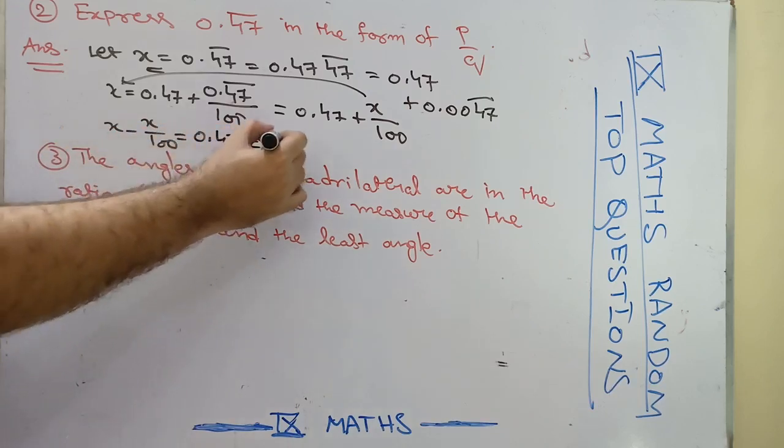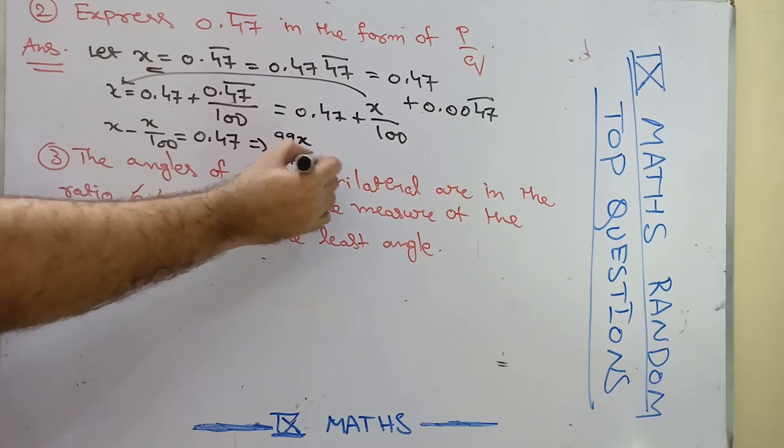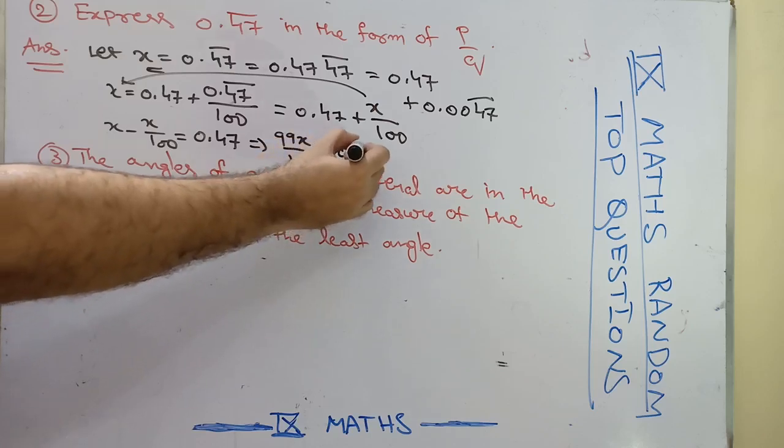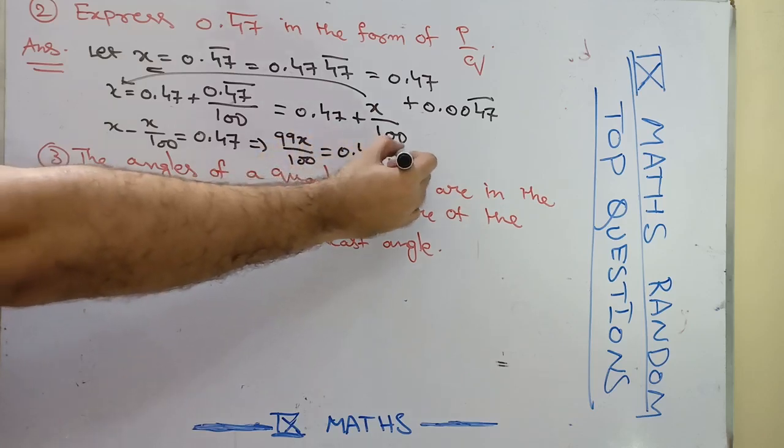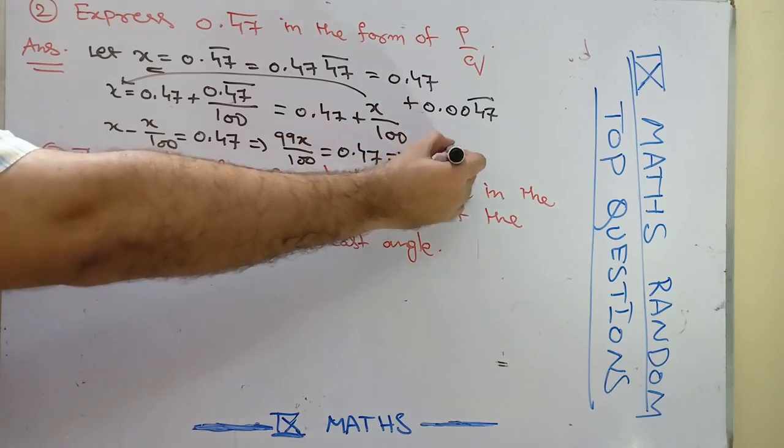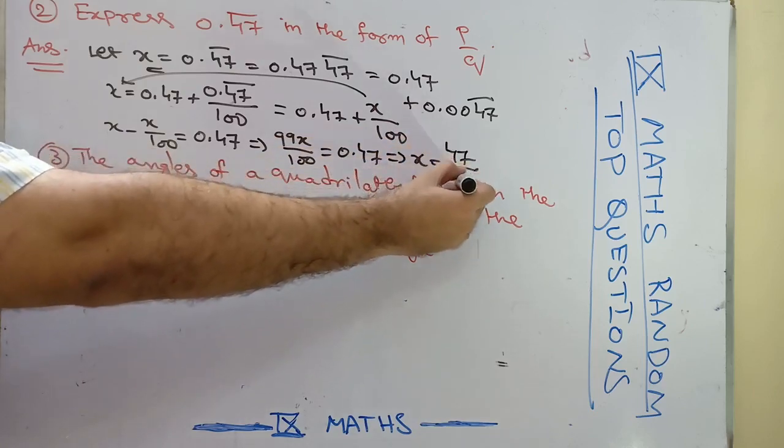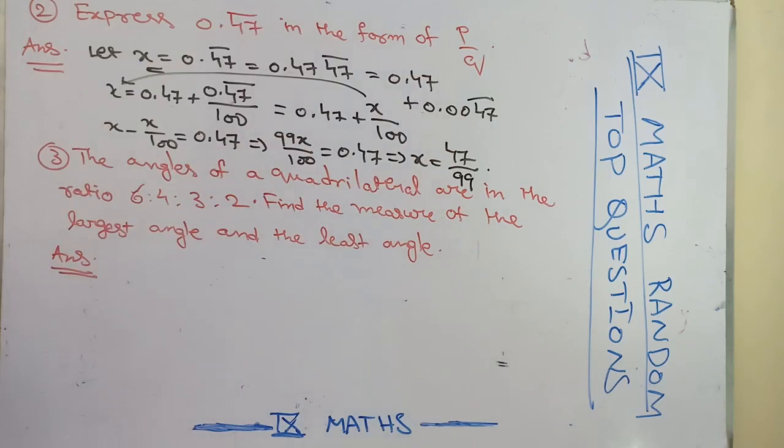Now if you take the LCM, you will get 99x by 100. So that is nothing but 0.47. Hence, x is equal to 47 divided by 99. Hence the answer for the first question.